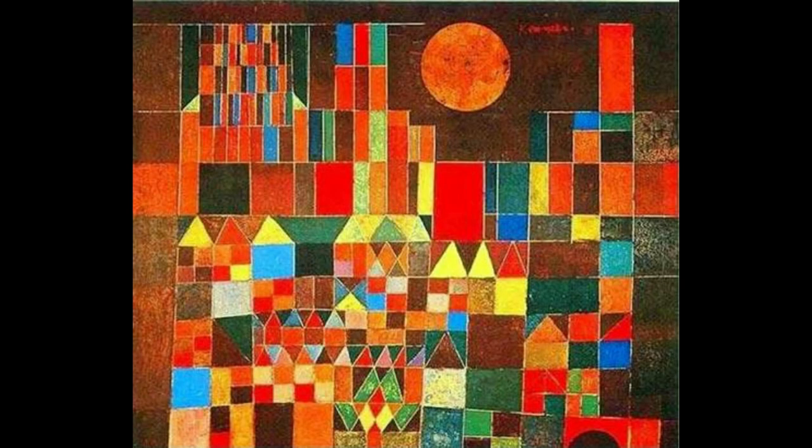In his painting, Castle and the Sun, Klee has constructed buildings with the use of geometric shapes only. The buildings have a very strong sense of structure. The most prominent geometric shapes in the buildings are squares and triangles.